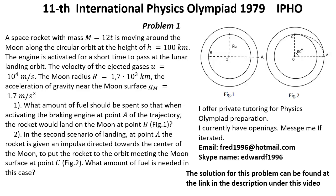First question. What amount of fuel should be spent so that when activating the braking engine at point A of the trajectory, the rocket would land on the moon at point B?